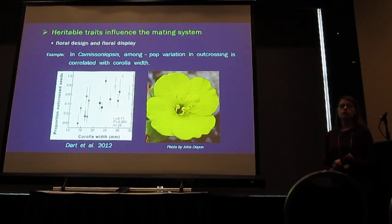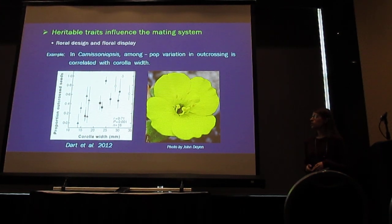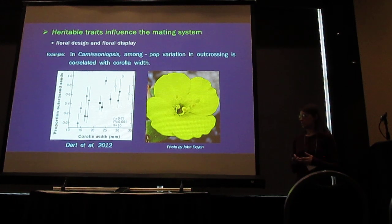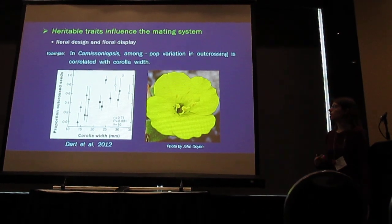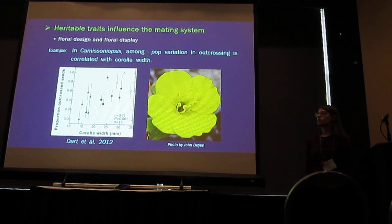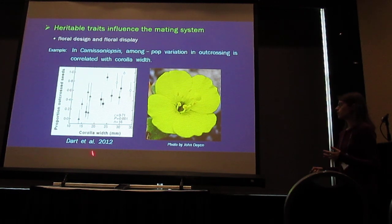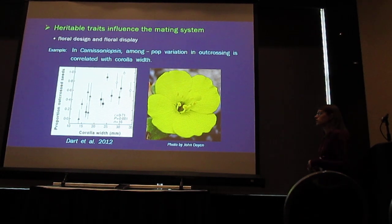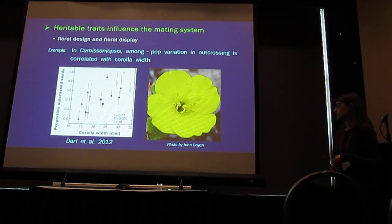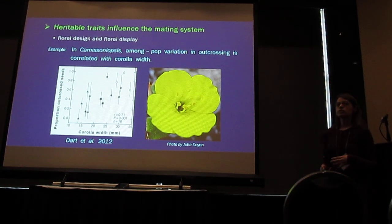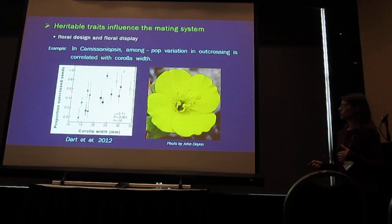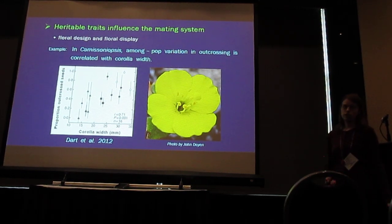Heritable traits may also influence the mating system. These include aspects of floral morphology, such as flower size, and also the number of flowers a plant produces in a given day. For example, Dart et al. found that in Chemicianopsis, among-population variation in outcrossing is correlated with corolla width. The x-axis is corolla width in millimeters and the y-axis is the proportion of seeds produced through outcrossed pollen. Populations where corollas tend to be wider have a higher proportion of outcrossed seeds, while populations with narrower corollas have a lower proportion.